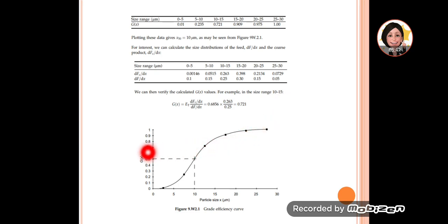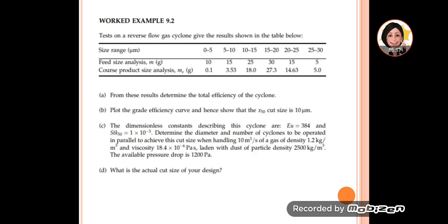Once plotted, we look for 50% efficiency. What is the size? Is it 10? Yes, it's correct. X50 equals 10 micrometer. That answers question B.